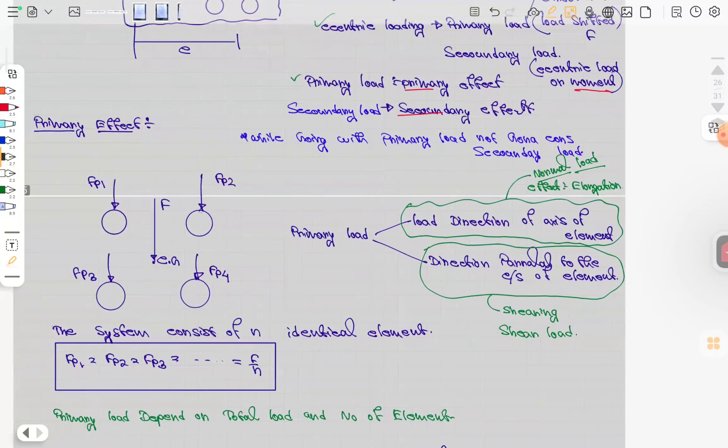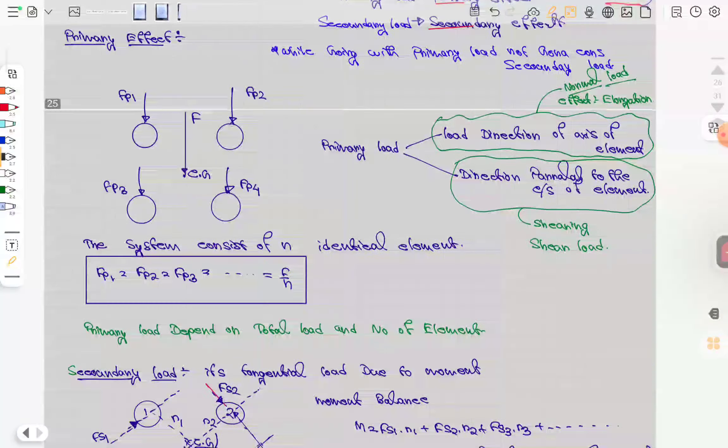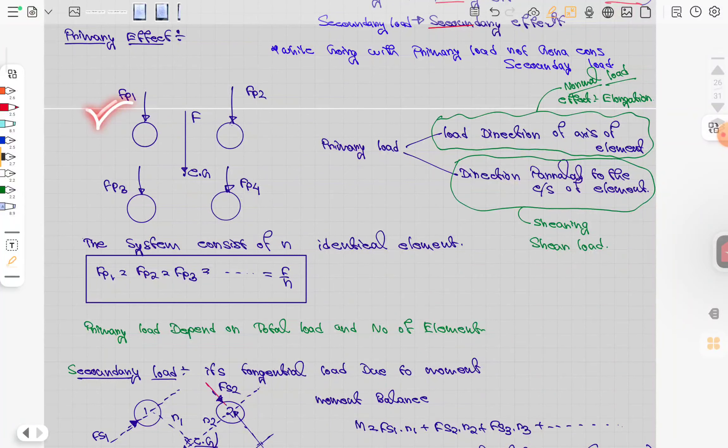Primary loading has two types: along the axis, which causes elongation, and perpendicular to the cross section, which is shearing load.